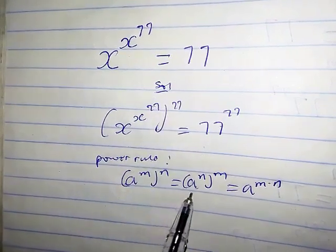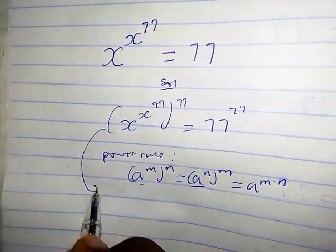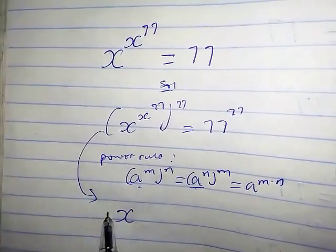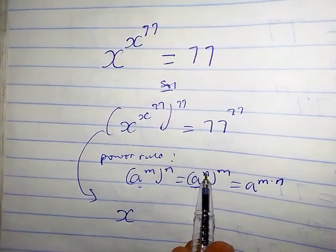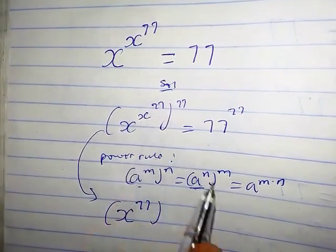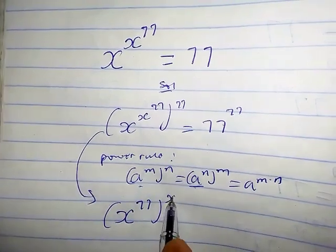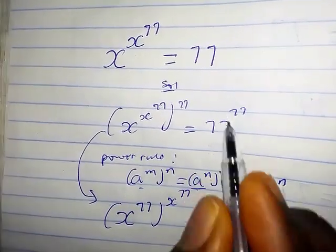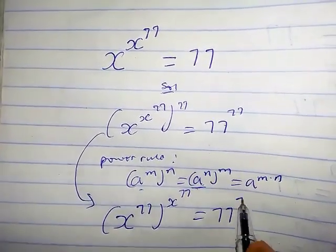So we're going to have x raised by what? That is n, which is 77. So we just pull out m, which is x raised by 77. So we have x raised by 77 equals the right-hand side, which is 77, raised by 77.